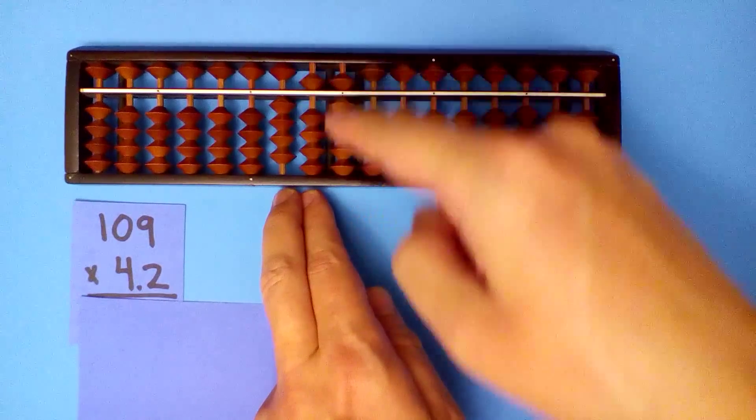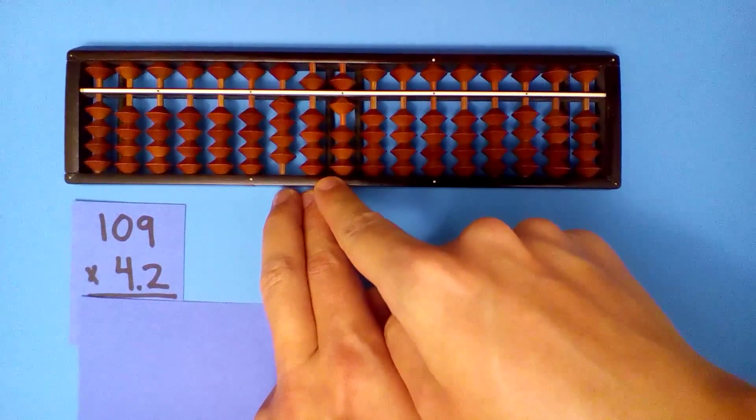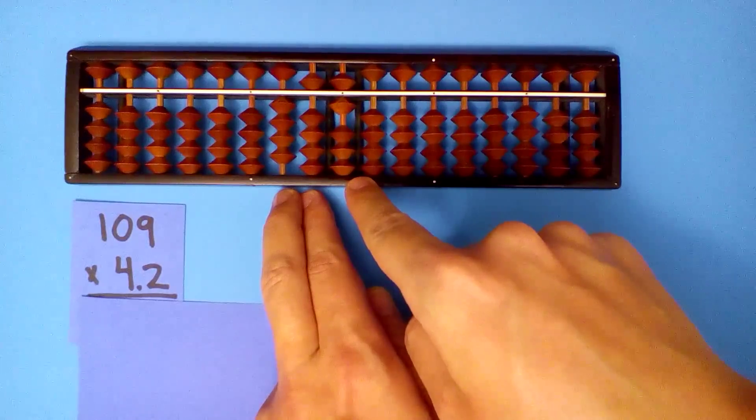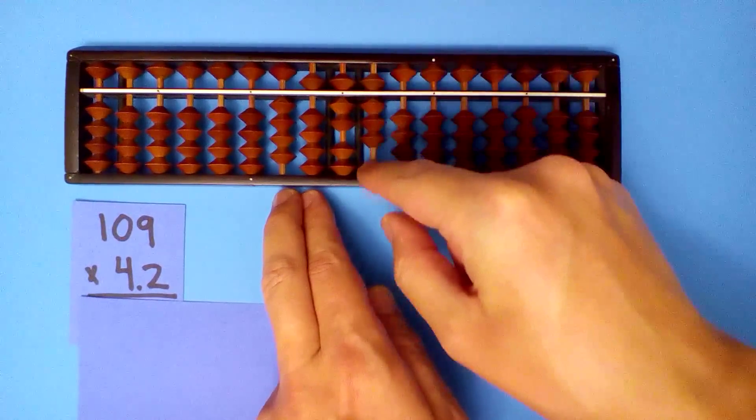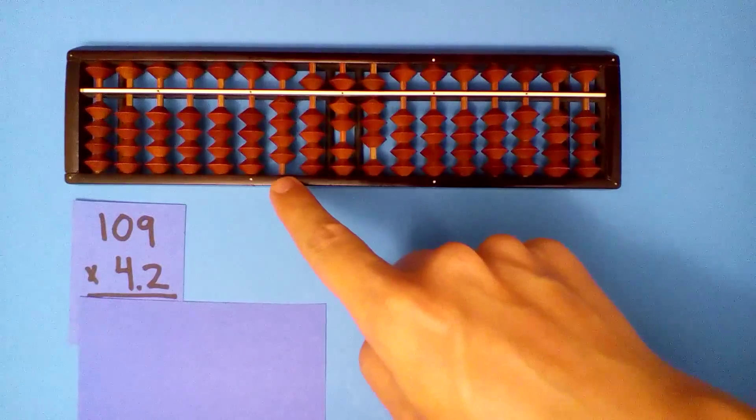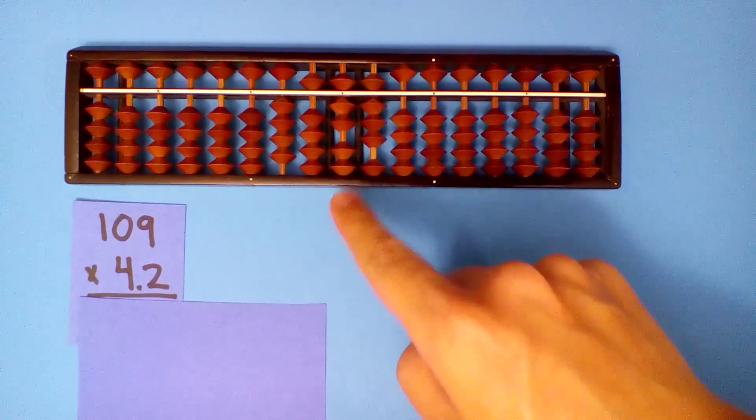Go one place to the right and use our two. Two times one, two. Two times zero, zero. Two times nine, eighteen. Our answer is 457.8.